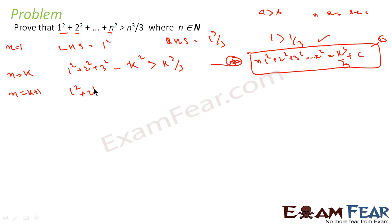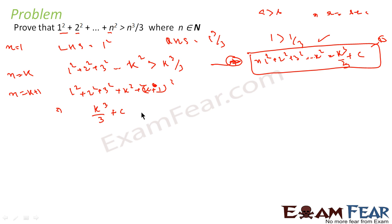For n equal to k plus 1, we get 1 squared plus 2 squared plus 3 squared plus ... plus k squared plus (k plus 1) whole squared. We know the value of 1 squared plus ... plus k squared from equation 1, so this becomes k cubed by 3 plus c plus (k plus 1) whole squared.